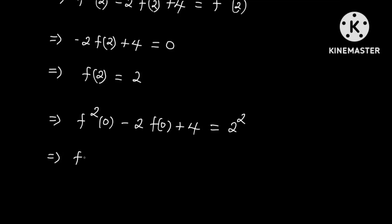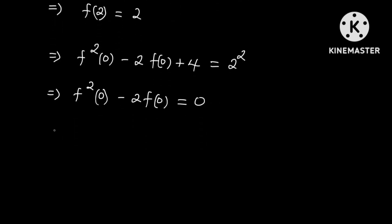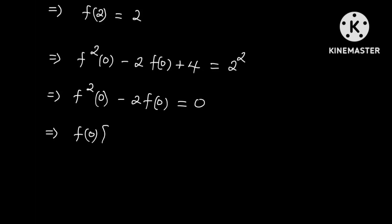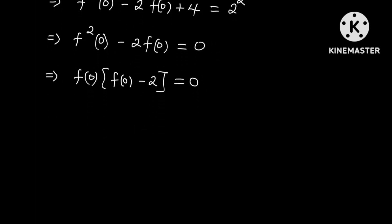This again implies that f squared of 0 minus 2 times f of 0 is equal to 0. If we factor out f of 0, we obtain f of 0 multiplied by f of 0 minus 2, which is equal to 0. This implies that f of 0 is equal to 0 or f of 0 is equal to 2.